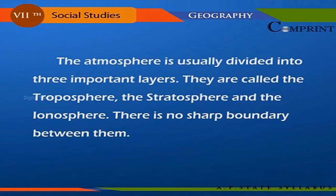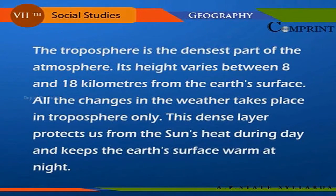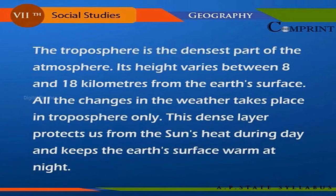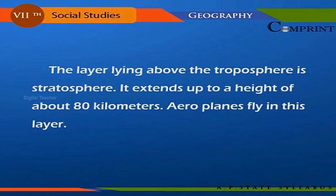The atmosphere is usually divided into three important layers: the troposphere, the stratosphere, and the ionosphere. There is no sharp boundary between them. The troposphere is the densest part of the atmosphere; its height varies between eight and eighteen kilometers from the earth's surface. All changes in the weather take place in the troposphere only. This dense layer protects us from the sun's heat during the day and keeps the earth's surface warm at night.